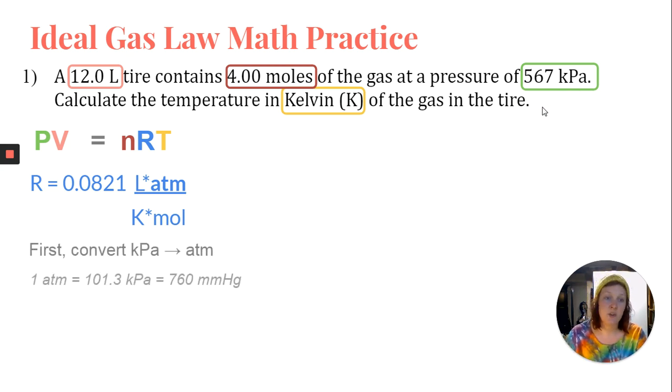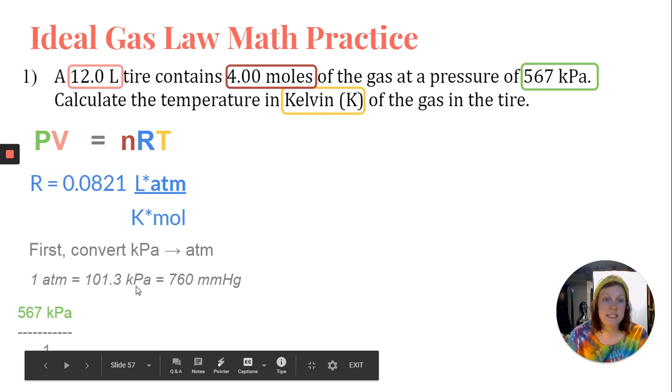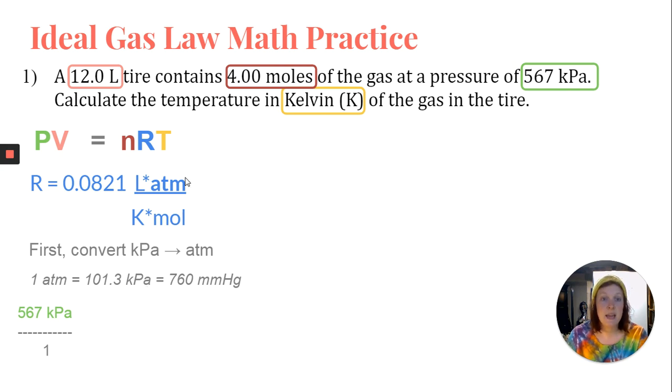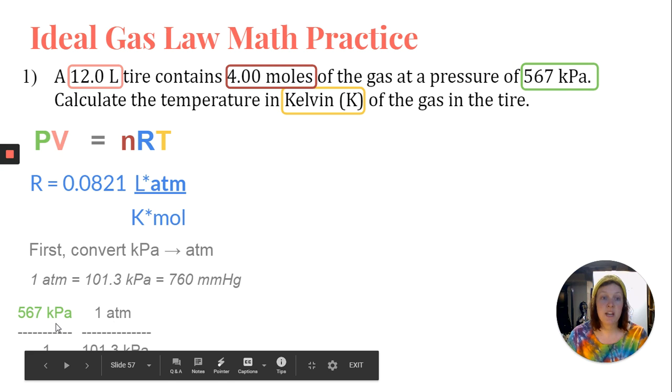And we're going to do that by using this conversion factor. Again, this is another conversion factor that will be provided for you on your test next week. So we're going to start with what we know, which is 567 kilopascals over unitless one. And we know that we're going to multiply that by a conversion factor. Remember, in dimensional analysis, the units that are on top must come down on the bottom. Kilopascals needs to go on the bottom. So the number will be 101.3 kilopascals on the bottom. And we're trying to get to atm. So we're going to put one atm on top. Now, notice this 760 millimeters of mercury. We're actually not doing anything with that right now. We don't have millimeters of mercury, nor do we need to get to millimeters of mercury. So we can just cast it aside and forget about it. We'll multiply our numerators together. We'll multiply our denominators together to create a new fraction. We'll then divide the denominator from the numerator. And we end up with 5.59724 atm.